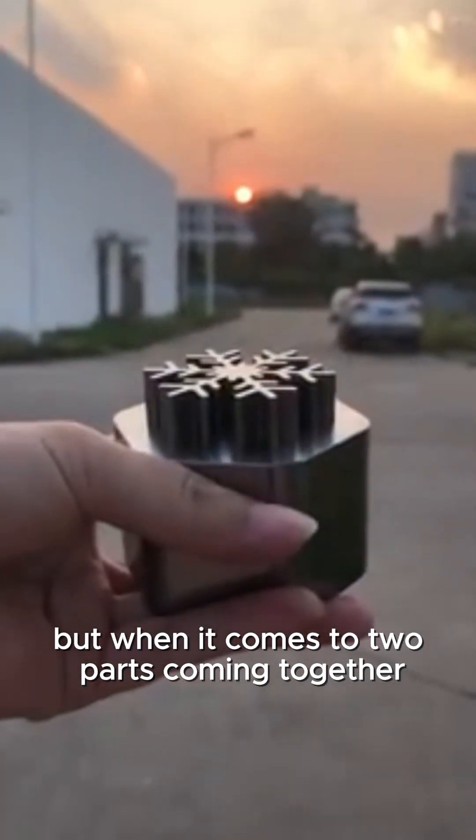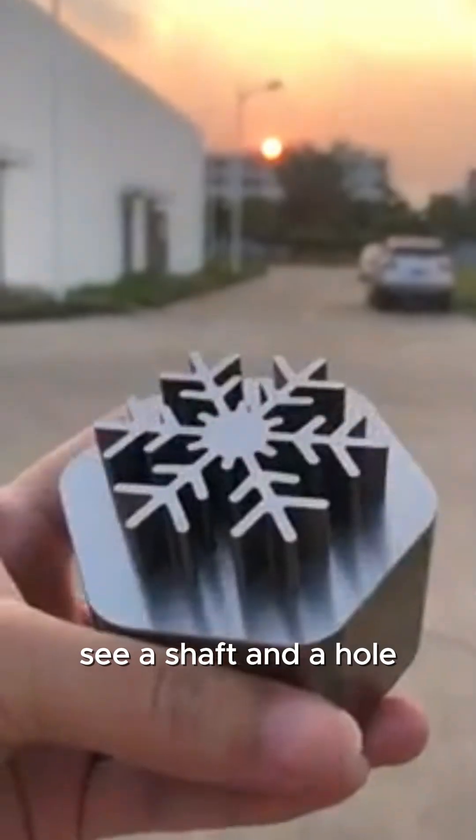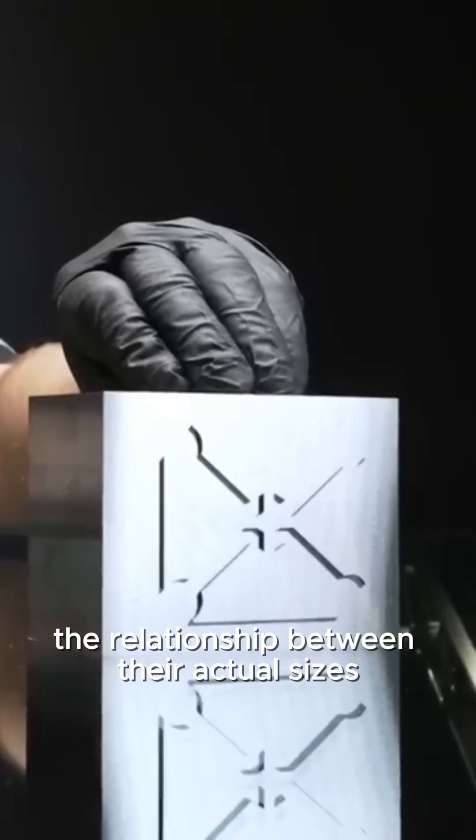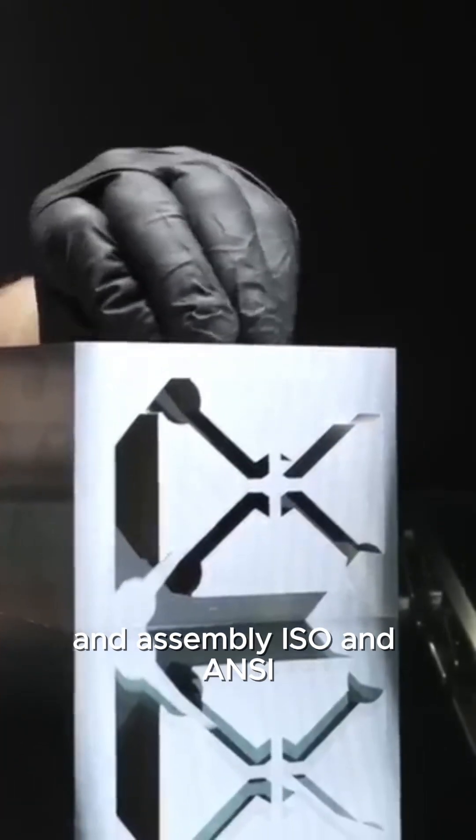But when it comes to two parts coming together, say a shaft and a hole, we don't just look at their individual tolerances. We focus on the fit—the relationship between their actual sizes in assembly.